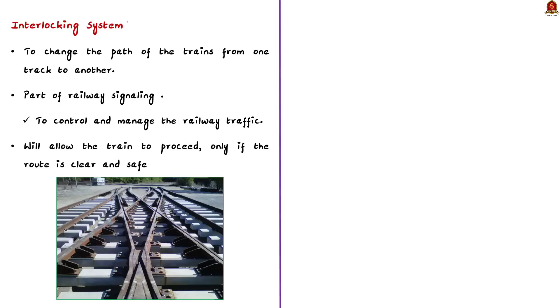Imagine you are on a train and you see a signal ahead showing a red light. This red light indicates that the track ahead is occupied or there is a potential danger and the train must come to a stop. The signal is controlled by the interlocking system which ensures that the track is clear and safe before allowing the train to proceed. Basically, the interlocking system is responsible for changing the path of trains from one track to another. It allows the train to proceed only if the route is clear and safe. This prevents collisions and ensures efficient rail operations.